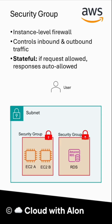For an example, a user sends a request, the security group checks it, and if allowed, the request reaches the EC2 instance. The EC2 processes and sends back a response. The security group automatically allows the response even if no outbound rules exist for the user.